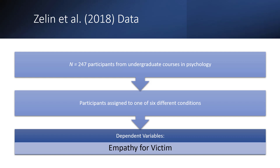We recruited a sample of 247 undergraduate students from introductory psychology classes. Students were randomly assigned to read one of six vignettes. After reading the vignettes, students answered questions about their intention to help the victim, how much they blamed the victim, and how much empathy they had for the victim. For our study today, we're going to focus on participant ratings of victim empathy.